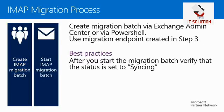In steps 4 and 5, you create the migration batch and start the migration. You can do this using the Exchange Online Admin Center or via remote PowerShell. After you start the migration batch, it will be queued. Best practice is to verify the status and confirm it has started via the syncing status. By default, an IMAP migration endpoint supports 20 maximum concurrent migrations and 10 concurrent incremental synchronizations.